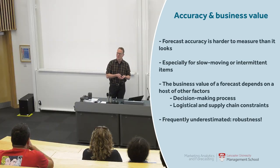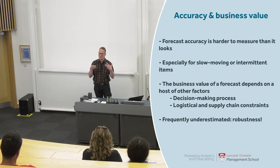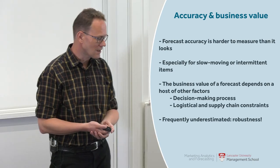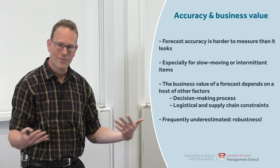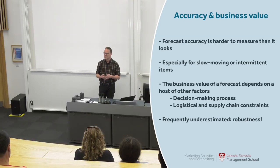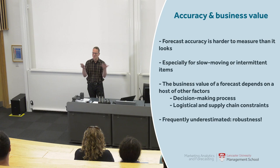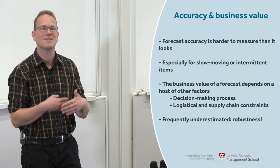Once you've measured your accuracy, the business value of a forecast depends not only on that accuracy, but on a host of other factors like the entire decision-making process. How do I take the forecast and turn that into a business decision? Especially logistical and supply chain constraints: if I can only replenish in pack sizes of eight, it doesn't really matter whether I'm forecasting three or five units demand — I'm always going to order one pack of eight.